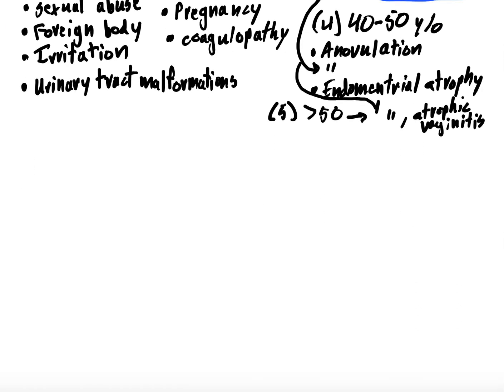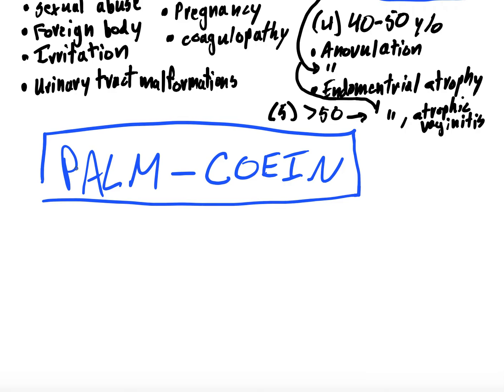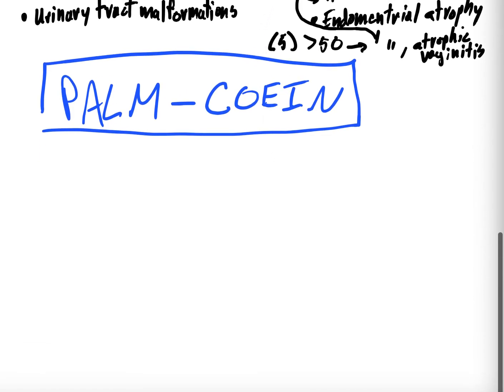And from that, I'm going to come down here and we're going to go into palm, Cohen. So P-A-L-M-C-O-E-I-N, palm, Cohen. What does this mean? So palm, Cohen is a way to help organize, kind of, a differential diagnosis on these patients. Let me just go down a little bit more. And what we'll organize it into is the palm portion, which will go here, and then the Cohen portion, which will go here. The palm portion are structural causes.